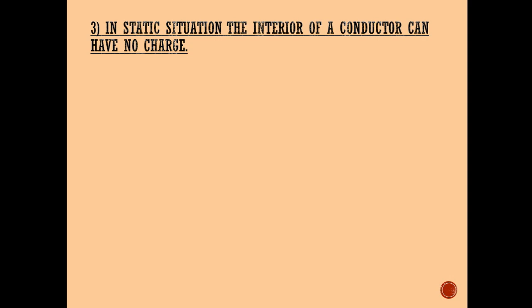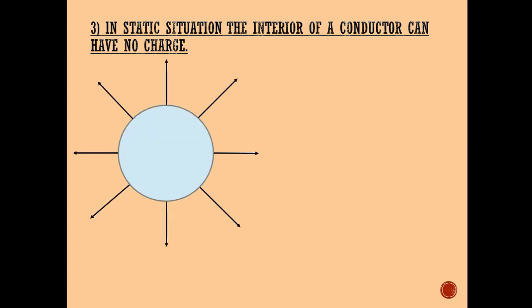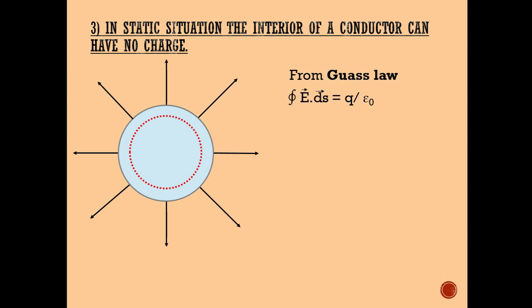The third property: in the static situation, the interior of a conductor can have no charge — that is, q = 0 inside the conductor, or equivalently σ = 0 inside the conductor. To prove this, consider a Gaussian surface inside the conductor. From Gauss's law: ∮ E⃗ · dS⃗ = q/ε₀. Since E = 0 on the Gaussian surface inside the conductor, the left-hand side equals zero, giving q/ε₀ = 0, and therefore q = 0.